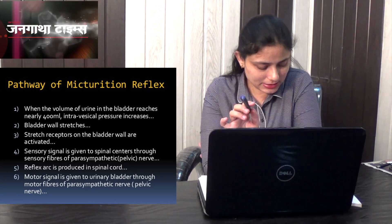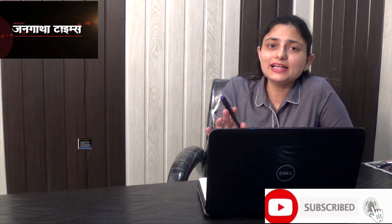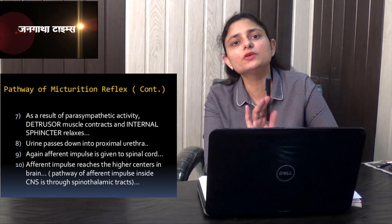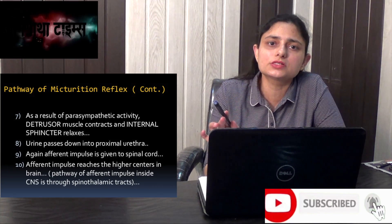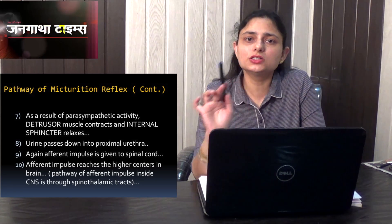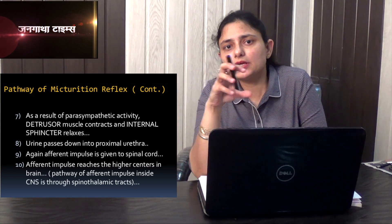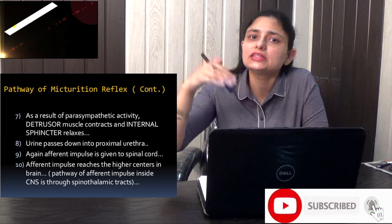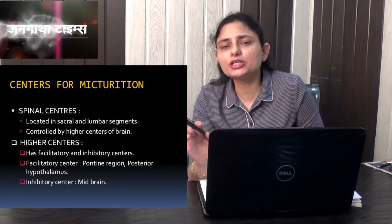The spinal cord sends motor signals through the motor fibers of the pelvic nerve, activating parasympathetic activity. This stimulates the detrusor muscle, causing it to contract, and the internal urethral sphincter relaxes and opens, so urine passes to the proximal urethra from the urinary bladder. The afferent impulses also travel to the higher centers of the brain through the spinothalamic tracts.